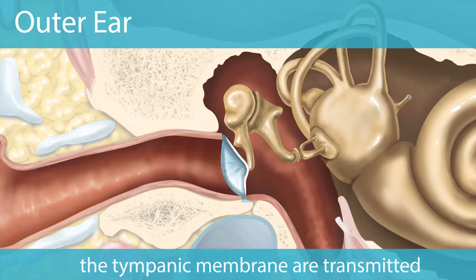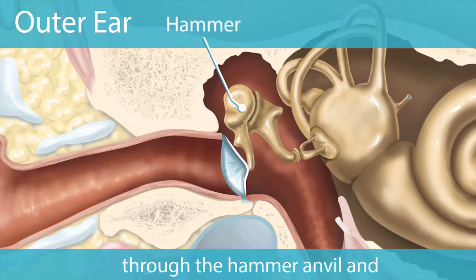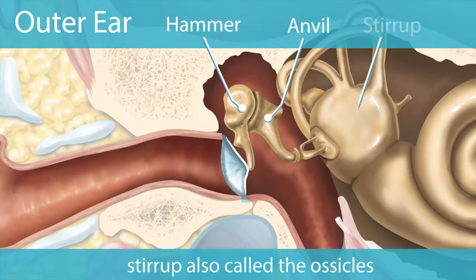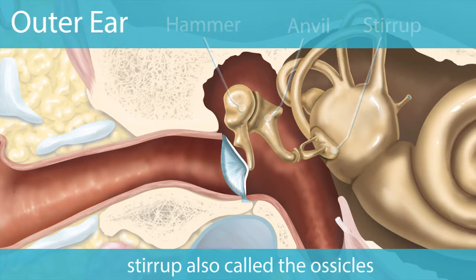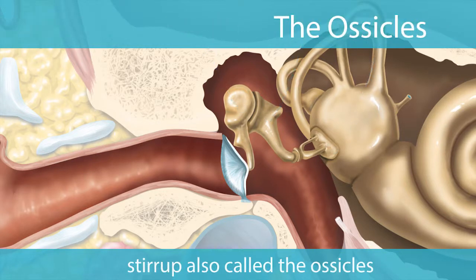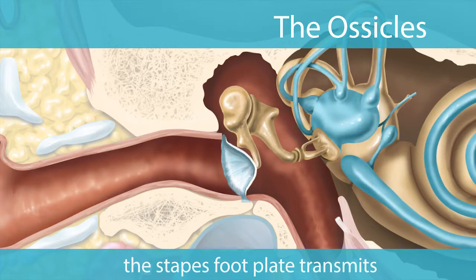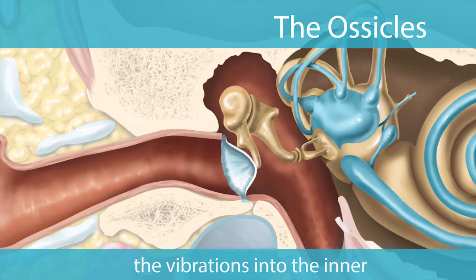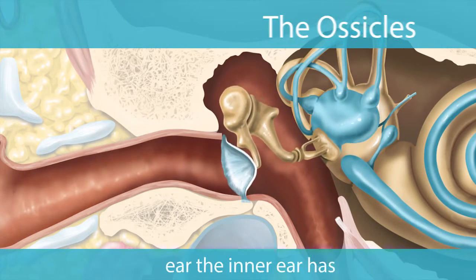The vibrations of the tympanic membrane are transmitted through the hammer, anvil, and stirrup, also called the ossicles. The stapes footplate then transmits the vibrations into the inner ear.